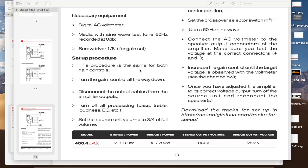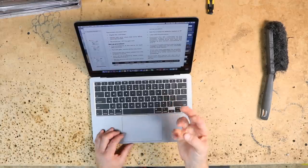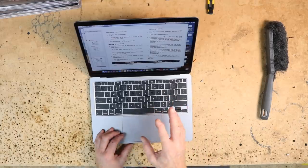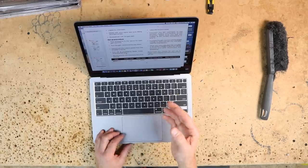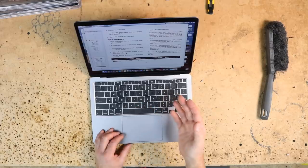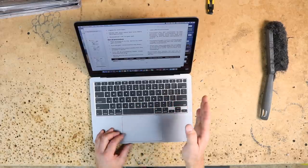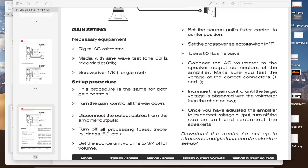So looking at the setup procedure, the first thing it's telling us is this is going to work channels one and two and three and four. We want to turn the gain all the way down, which we did. Disconnect output cables from the amplifier outputs. We haven't connected them into the car yet. We've just hooked up power and ground, so we're good there. Turn off all processors, bass, treble, loudness, etc. That's going to be in the head unit, be it factory or aftermarket. Make sure it's set to flat. Set the volume at three quarters. Make sure that your fader control is set to the center. Set the crossover to the F or full range.